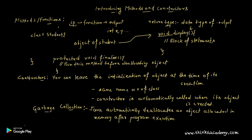We have seen garbage collection, constructors, and functions. In the next tutorial we are going to take a closer look at methods and constructors, covering important topics like overloaded methods, overloaded constructors, the final keyword, the static keyword, and access specifiers like public, protected, and private. Thanks for watching.